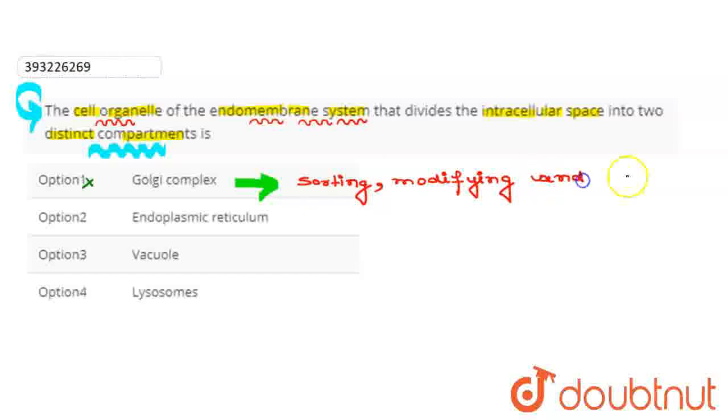The second option here is the endoplasmic reticulum. यह हमारी cell organelle है, endomembrane system की,